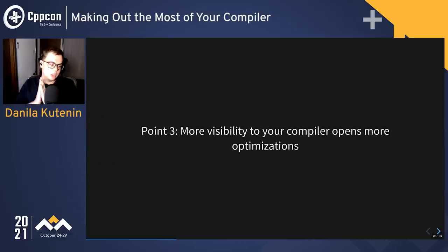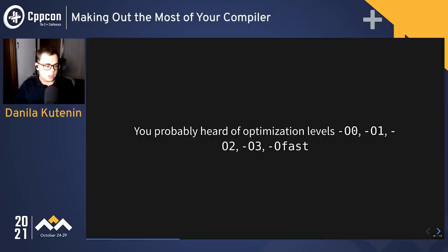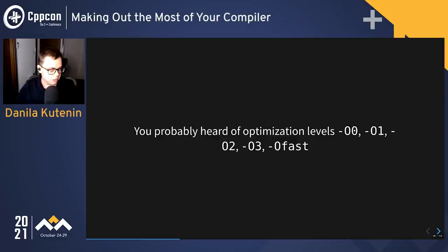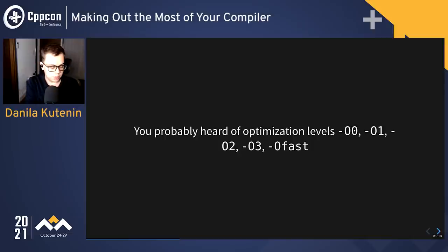More visibility to the compiler opens up more non-trivial optimizations. Next story: there is some confusion about optimization levels — -O0, -O1, -O2, -O3, -Ofast. To understand what they actually mean, let's dive a little bit into the architecture of compilers.